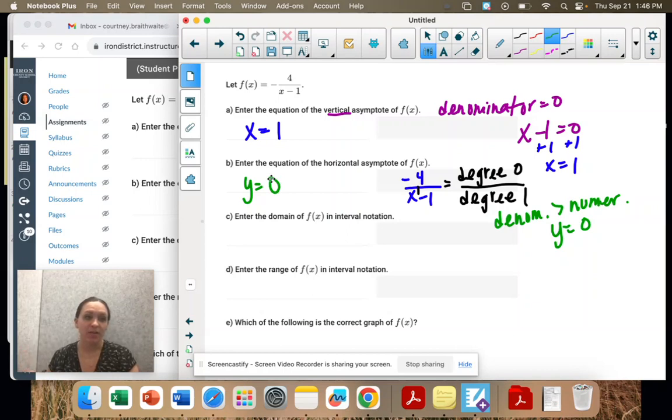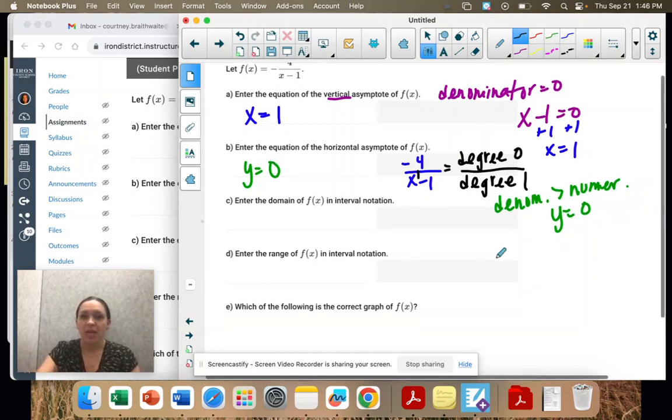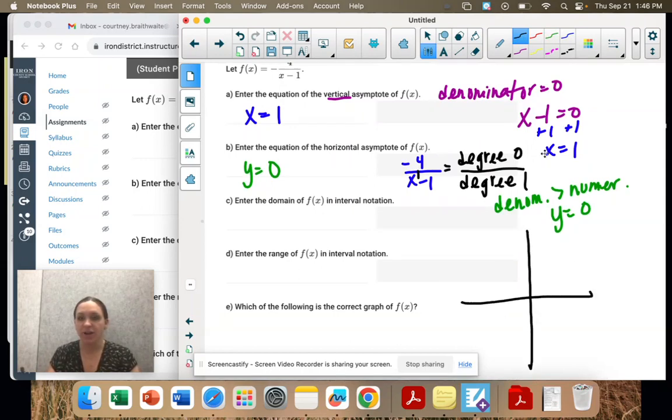So refer back to your chart with the three rules. So domain and range. We're going to have to look at the graph eventually. But for now, I could figure this out because I know my asymptotes. I have a vertical asymptote of x equals 1. So that means that my domain goes along and breaks at 1.